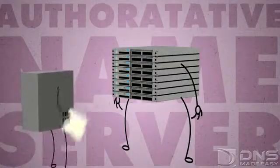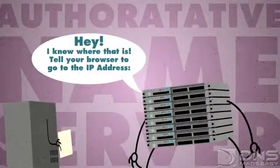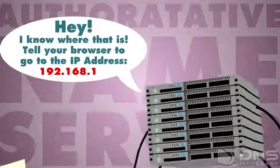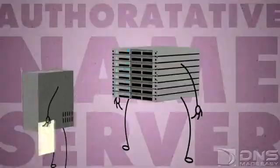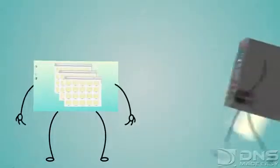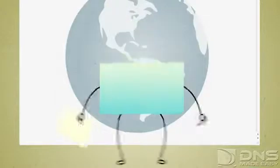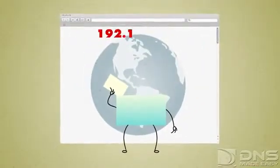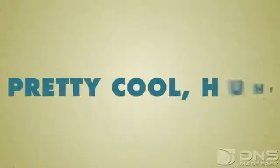At this point, the authoritative name server will say, "Hey, I know where that is! Tell your browser to go to the IP address 192.168.1.1." The resolving name server takes this information from the authoritative name server, puts it in cache, and gives a reply to the operating system. The operating system then gives this to the browser, and the browser then makes a connection to the IP address requesting the webpage for www.example.com. Pretty cool, huh?